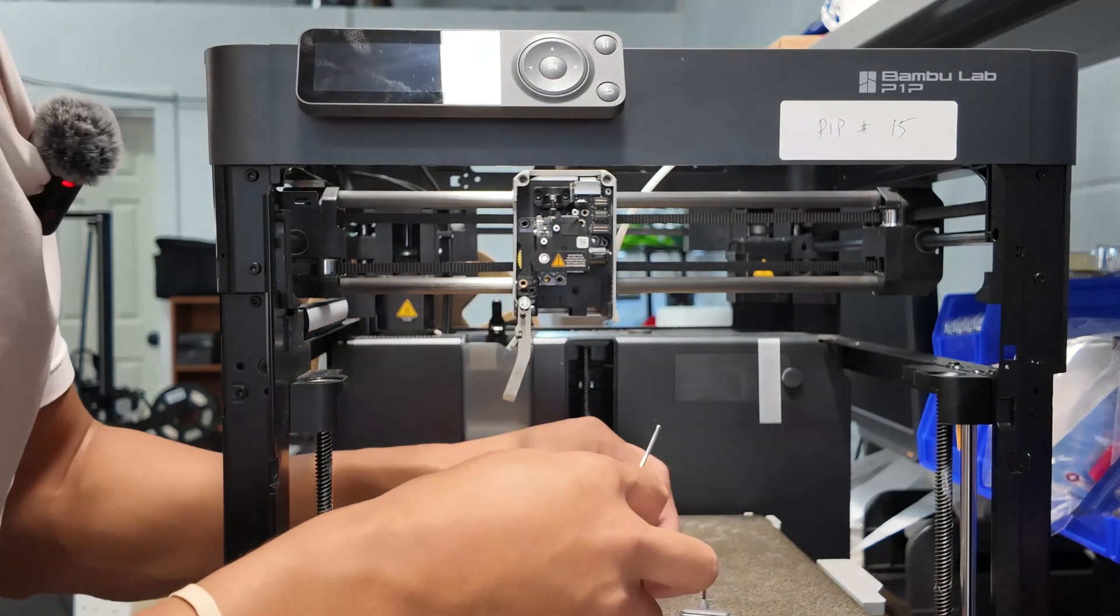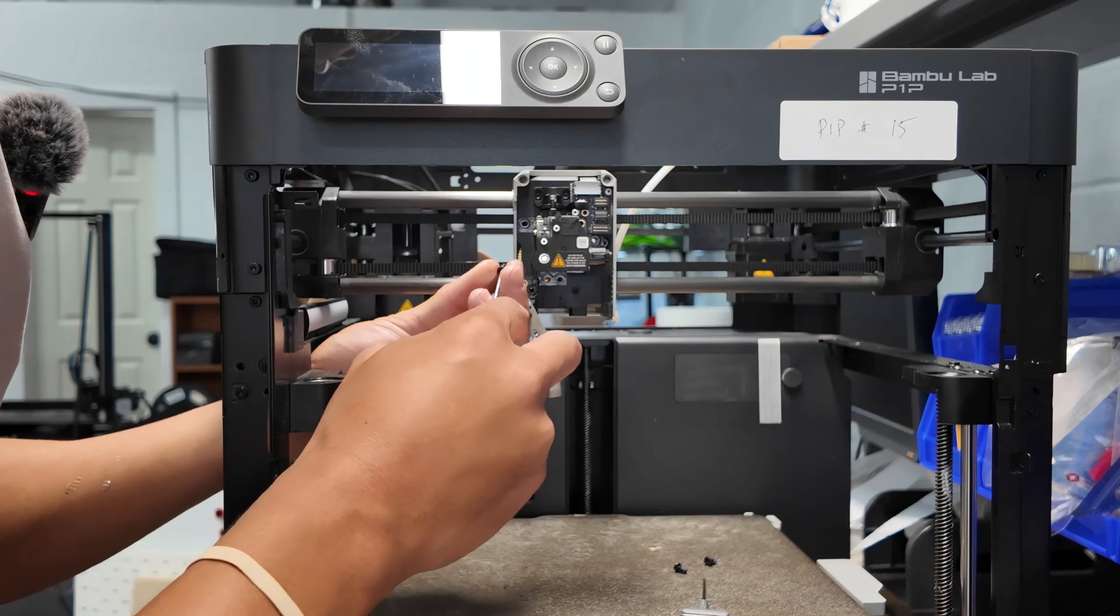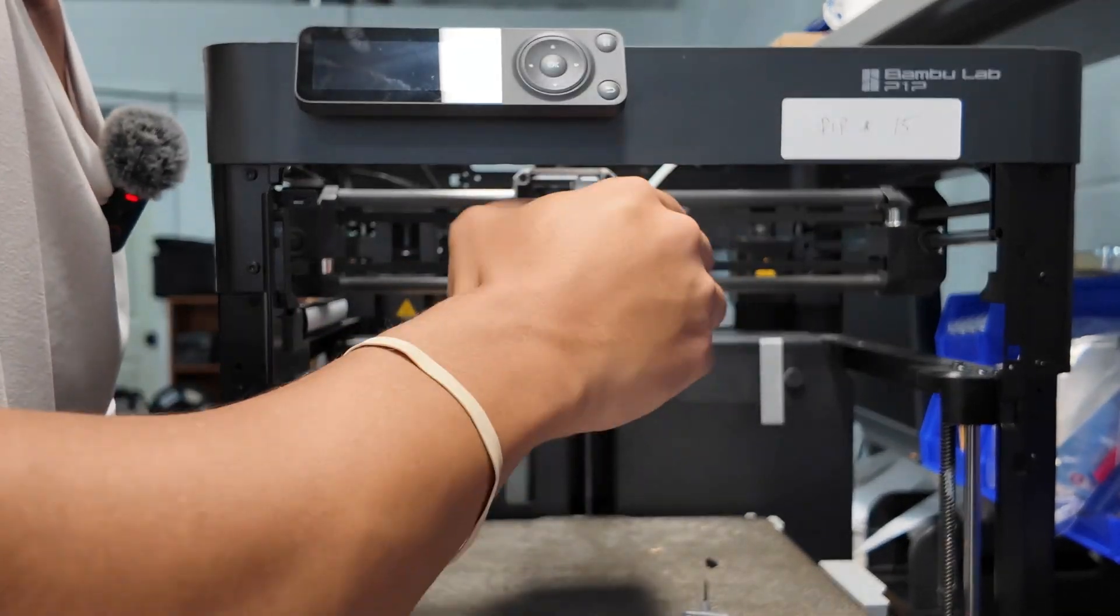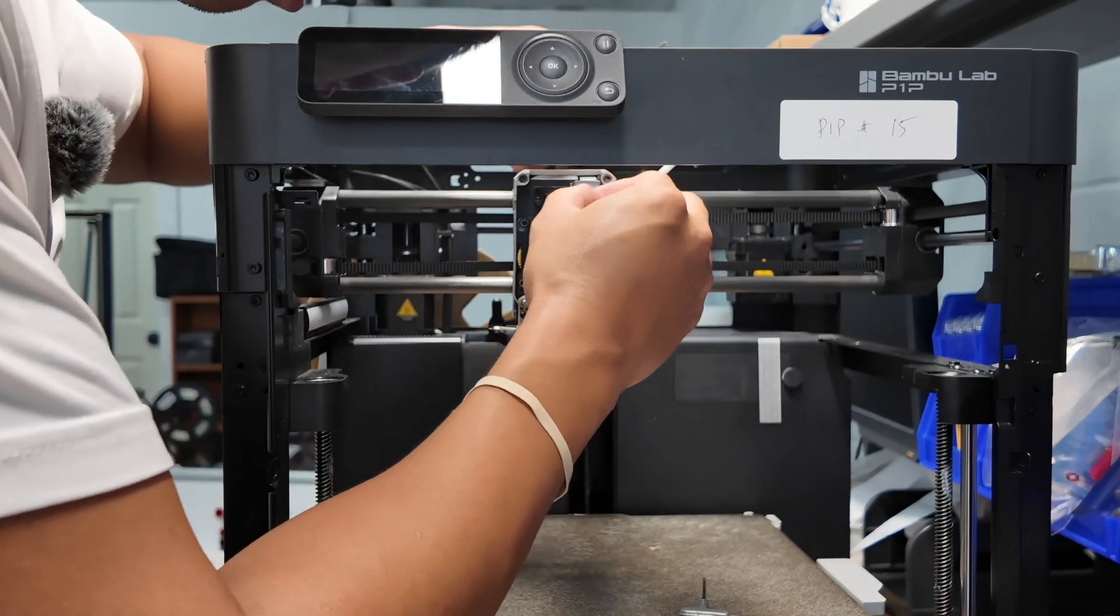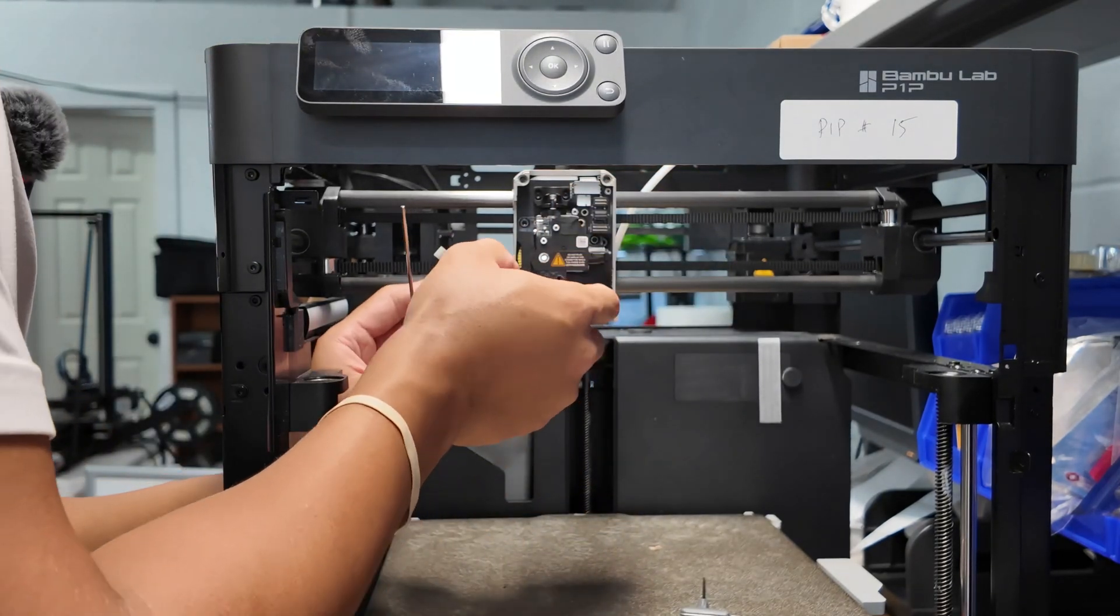Take your three screws that you took out and put it right back in. All right. Reattach the sensor up here and the filament cutter.